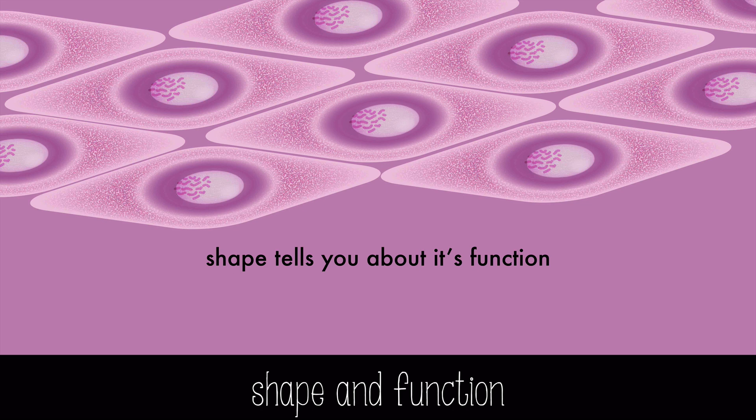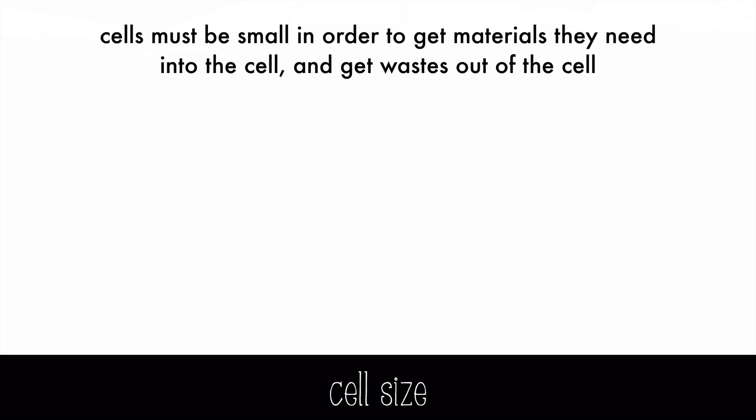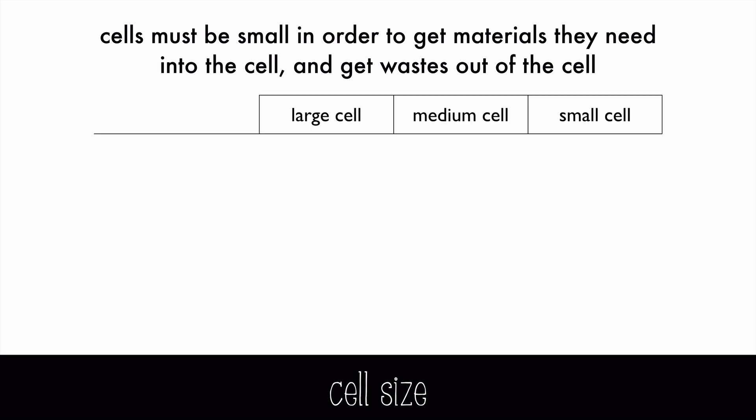Cells are also very, very, very small. They have to be small in order to get materials they need into the cell and to get waste out of the cell. It comes down to a ratio between their surface area and their volume.